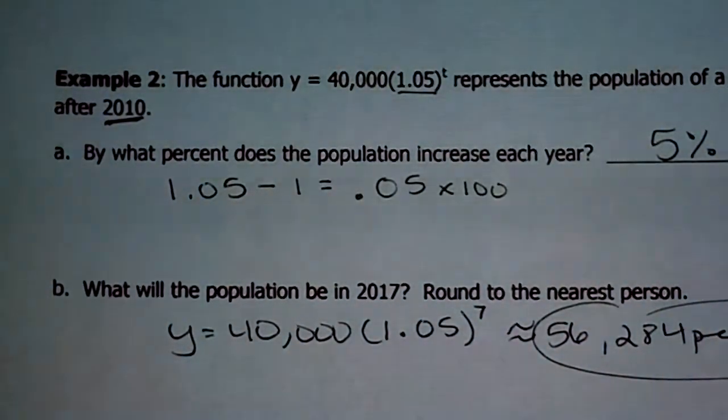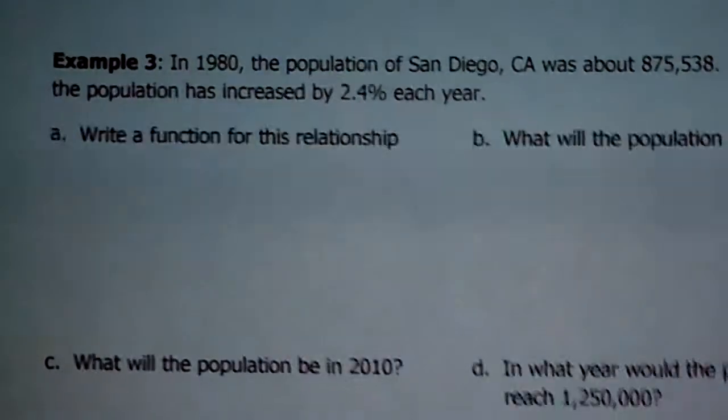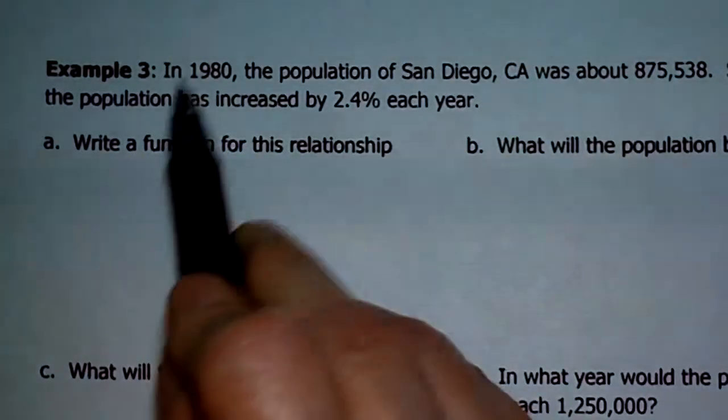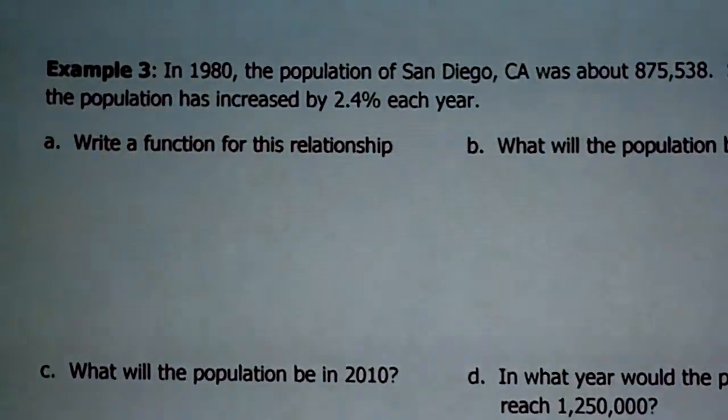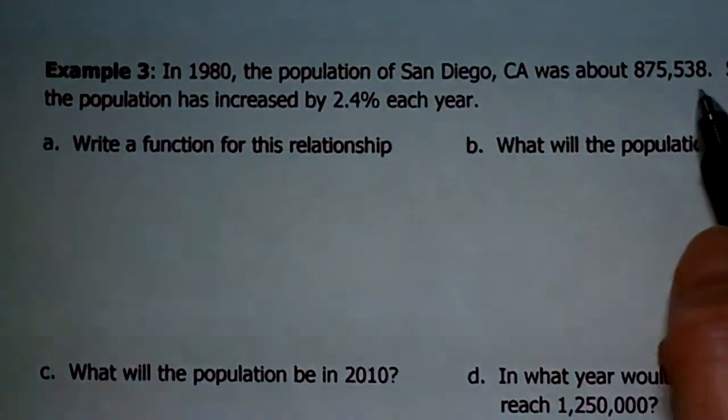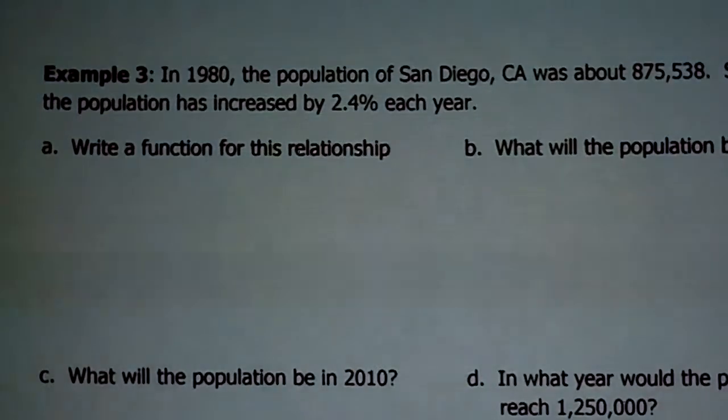All right. The last one, the grand finale. There's four parts to this one. A, B, C, D. I know. We're learning the alphabet and math. So exciting. Anyway. Sorry. That was bad. In 1980, the population of San Diego, California was about 875,538. Since 1980, the population has increased by 2.4% each year. So in all the rest of them, I gave you an equation to use. This one, I did not give you the equation. You know what that means? You're going to have to write it. That's what letter A says. Write a function for this relationship.